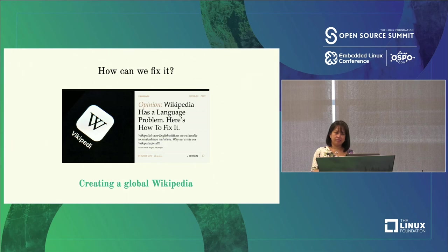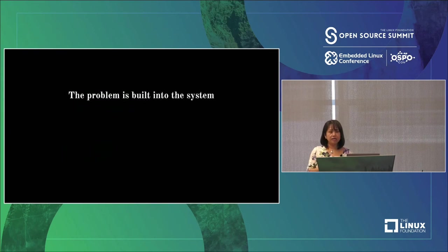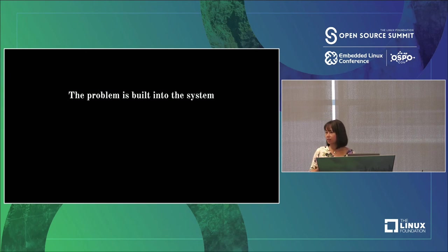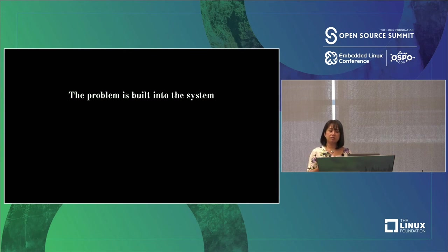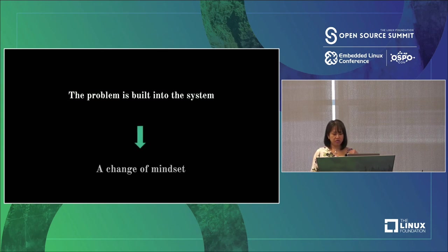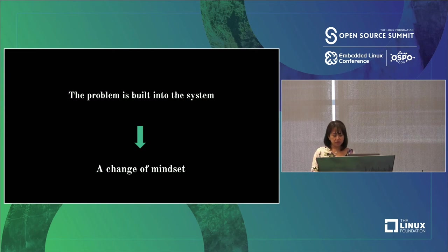The reason I suggested this rather than small changes here and there is because the problem is built into the system. Even if Wikipedia managed to remove abusive editors from its Japanese or Croatian language versions, the same thing can happen again — and I think it will. In order to really solve this problem, it requires a change of mindset. We need to change the way we think about Wikipedia itself.